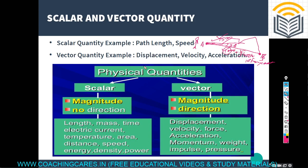In the study of motion, these two quantities — scalar and vector — play a very important role. For example, velocity is a vector quantity under motion because direction is defined along with speed. Speed, on the other hand, is without direction and is a scalar quantity.